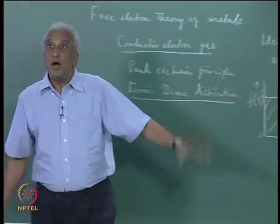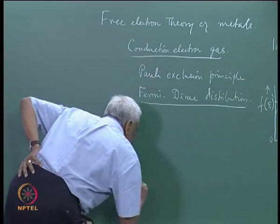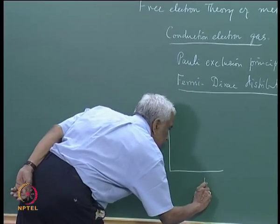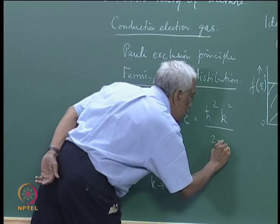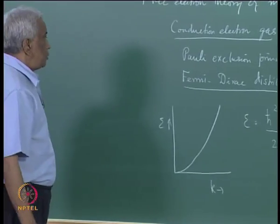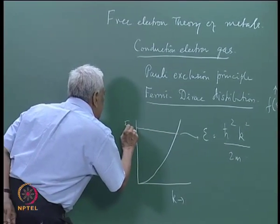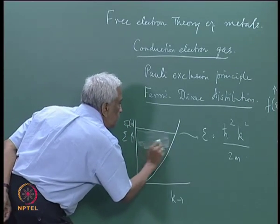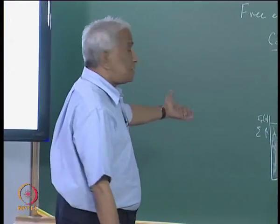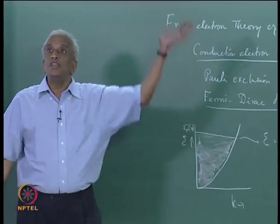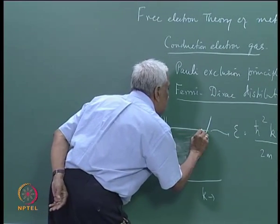This profoundly affects the way electrons are distributed in energy. The Fermi-Dirac distribution function at absolute zero has the value 1 below the Fermi energy E_F and 0 above it. All states with energies less than the Fermi energy are completely occupied, each state by a single electron, and all states above the Fermi level are completely empty. The Fermi energy at absolute zero is thus the highest energy level occupied in a metal.